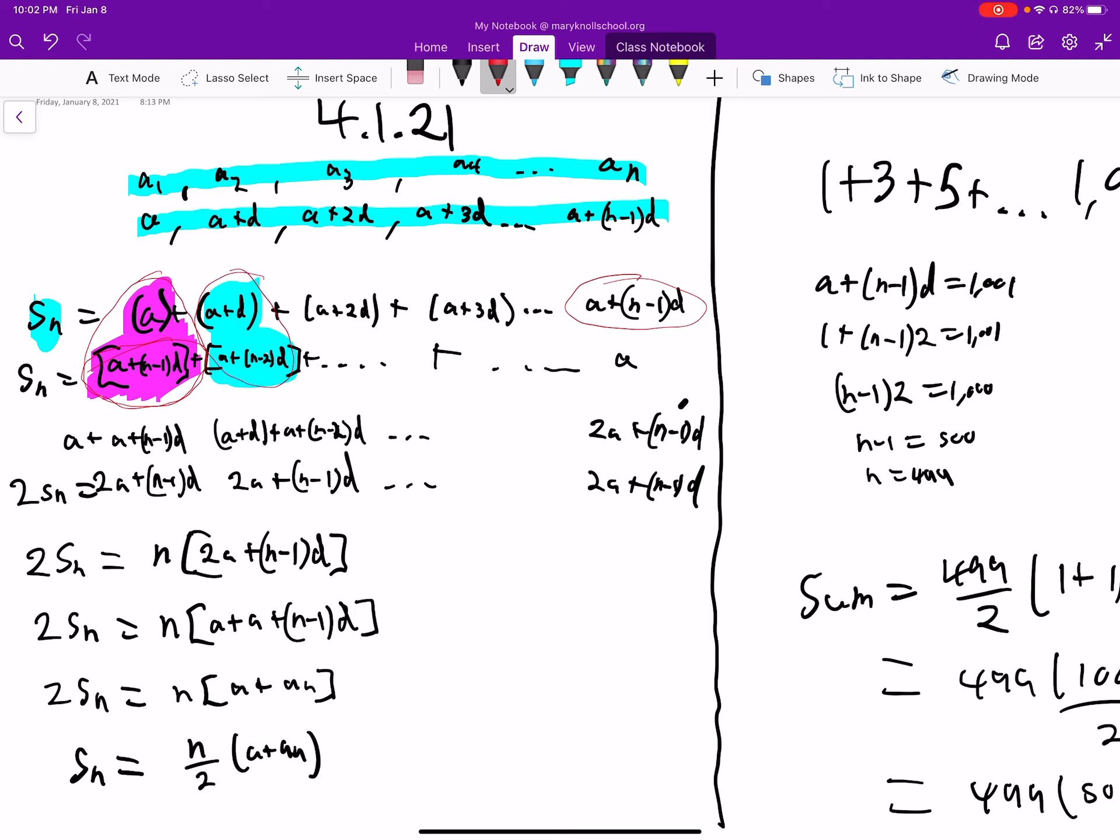So we're going to get 2SN total. So SN plus SN, 2SN. When we do that, we notice we get the same thing every time. We get 2A plus (N-1)D, 2A plus (N-1)D, 2A plus (N-1)D, etc.